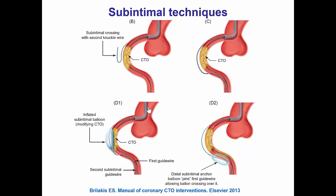This is an illustration of what was done. We exited the true lumen proximal to the occlusion, created a knuckle, advanced the knuckle sub-intimally distal to the occlusion, and then delivered another balloon that was inflated adjacent to the proximal cap, essentially crushing the proximal cap.